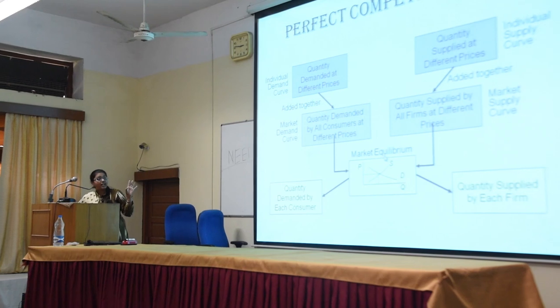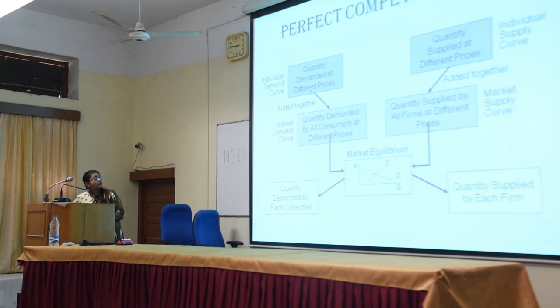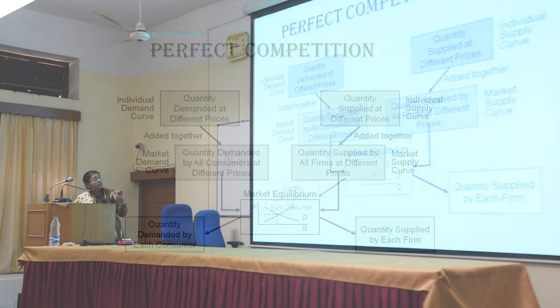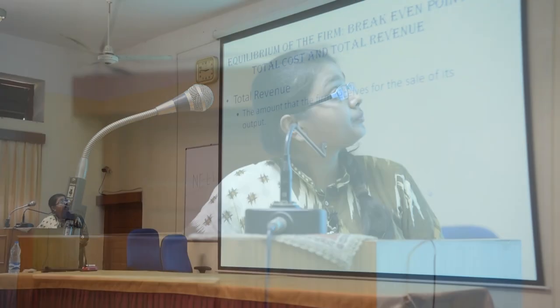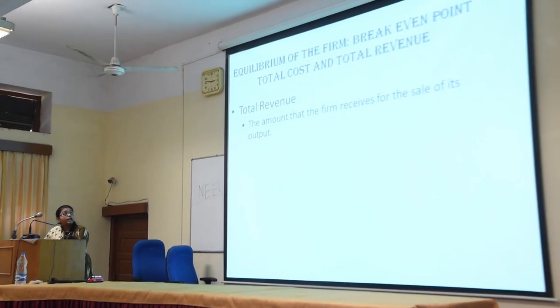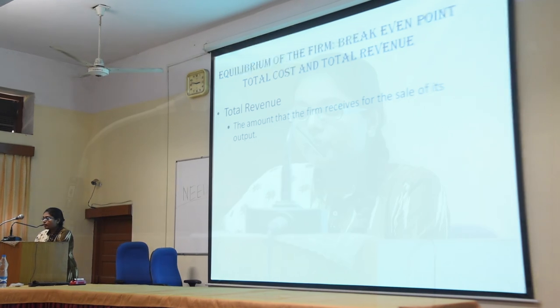The whole picture can be described as follows: individual demand curves added together give the market demand curve, and individual supply curves added together give the quantity supplied by all firms at different prices. From these we get market equilibrium — the equilibrium price at which a certain quantity is supplied by each firm, and the corresponding quantity demanded by each individual.